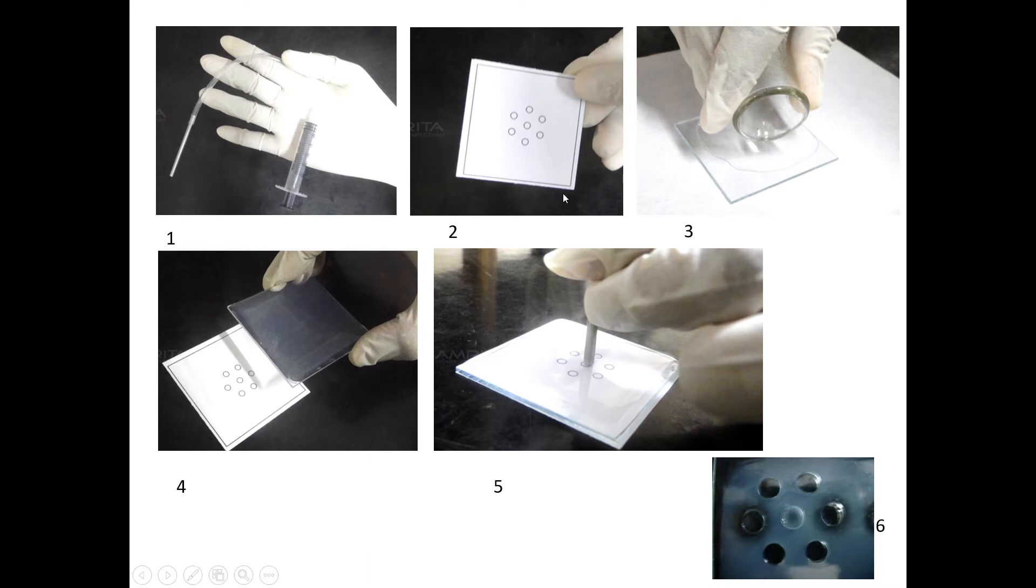First, weigh 1 percent or 1.2 percent of agarose and dissolve in the respective volume of 1X phosphate buffer saline. Then boil until the agarose goes into solution—that is, you need to get a clear solution.